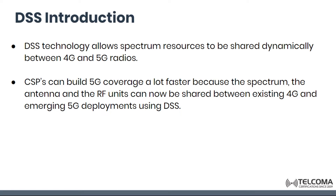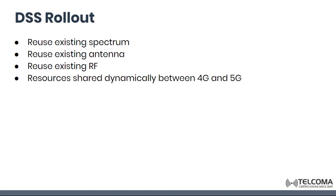4G coverage rollout took several years without DSS, since new spectrum, new antenna and new RF units were required. In contrast to this, communication service providers can build 5G coverage a lot faster, because the spectrum, antenna and RF units can now be shared between existing 4G and emerging 5G deployments using DSS technology. This basically allows for fast 5G coverage rollout.